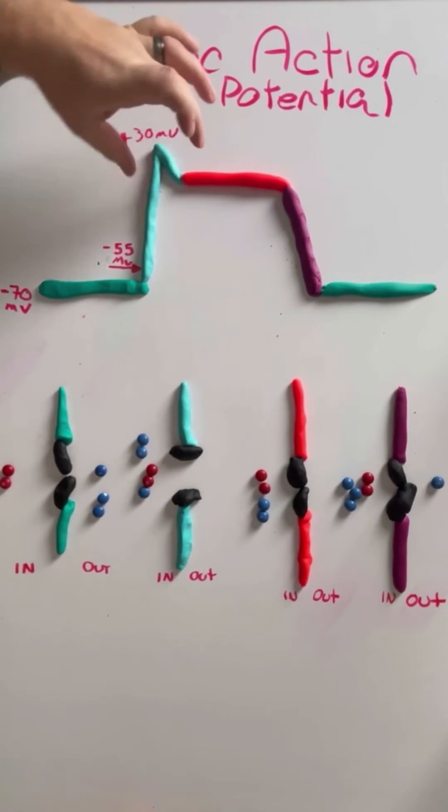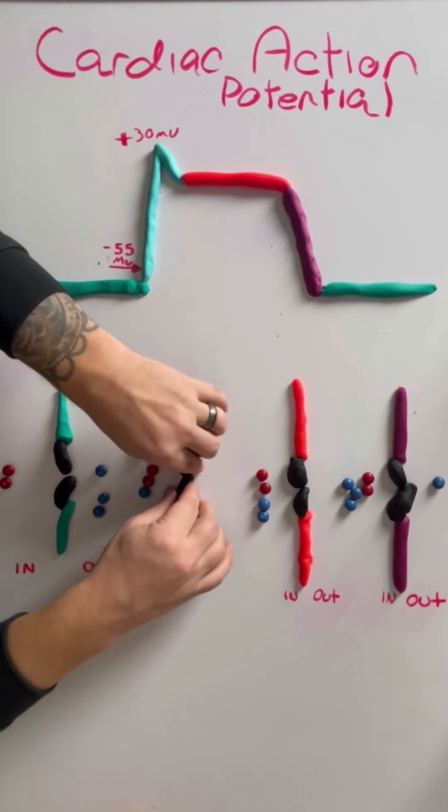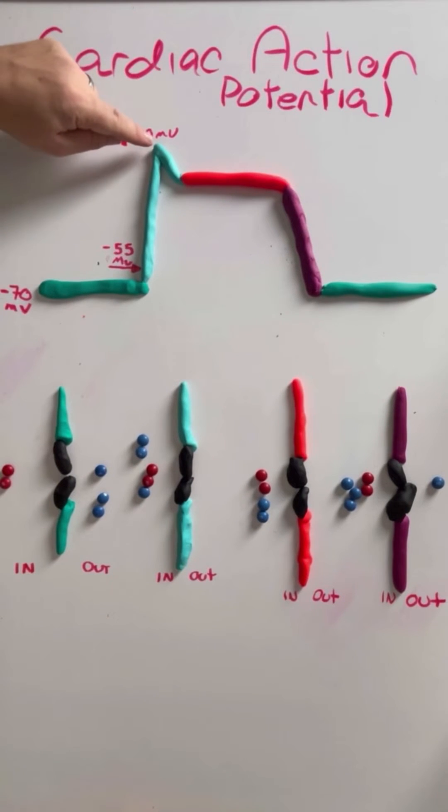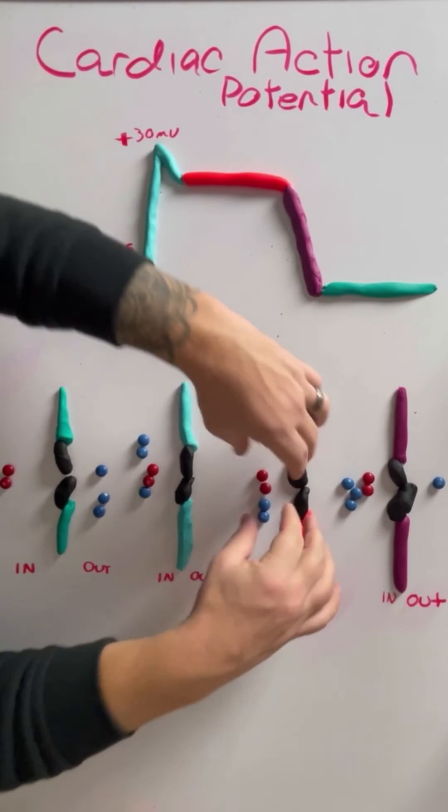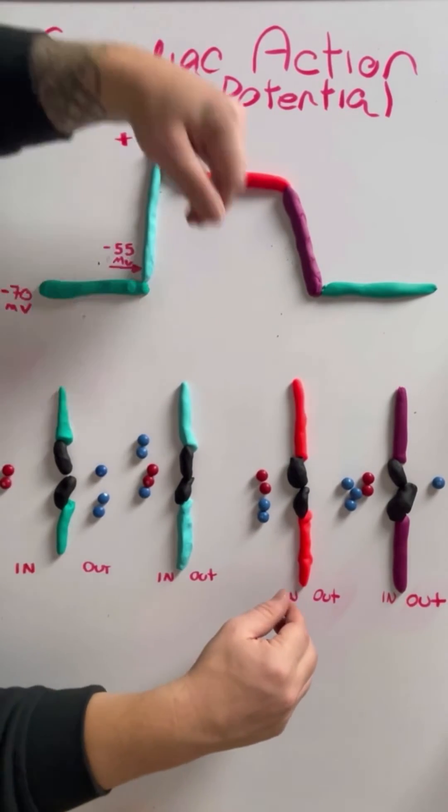Now, once we get to that point, our sodium channels are going to close. And when they close, that means that we're gonna kind of lose a little bit of that potential here. You see this little spike and then it kind of starts to peter off. Well, why that occurs is because as soon as we create action potential and we have that depolarization...